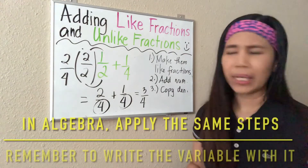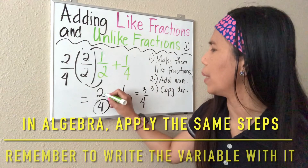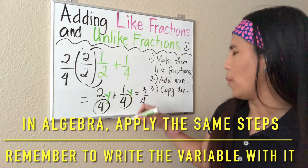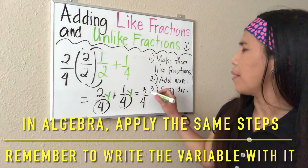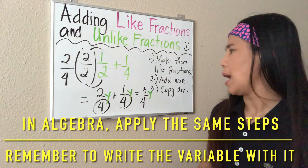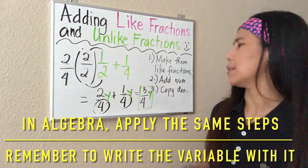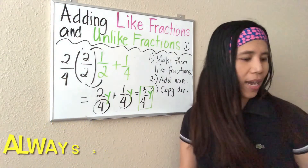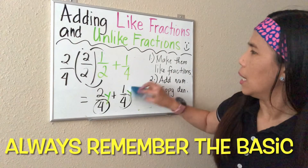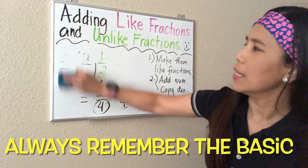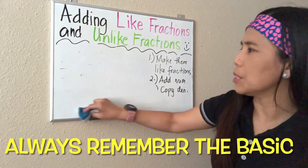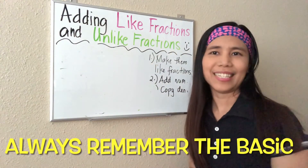In algebra, when they give you a problem with a variable — for example, two-fourths-y and one-fourth-y — it's the same process. You just add the numerators, don't forget the variable, and copy the denominator. That gives you three-fourths-y as your final algebra answer. If you know the basic process, you can handle both simple problems and algebra problems. And that's it!